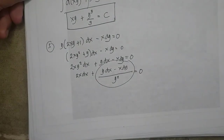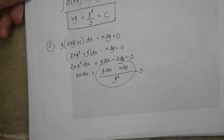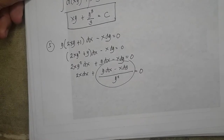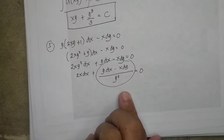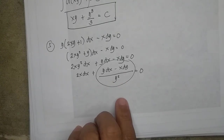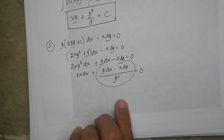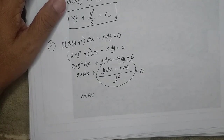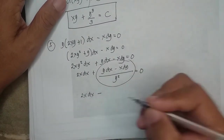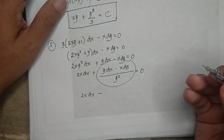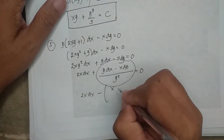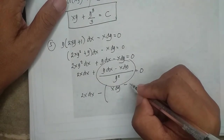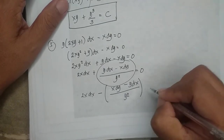This falls under what formula? Looking at the seven formulas, y dx minus x dy over y squared matches formula number two. To get positive x dy, we multiply by negative: so we have 2x dx minus (x dy minus y dx) over y squared = 0. This falls under formula number two.